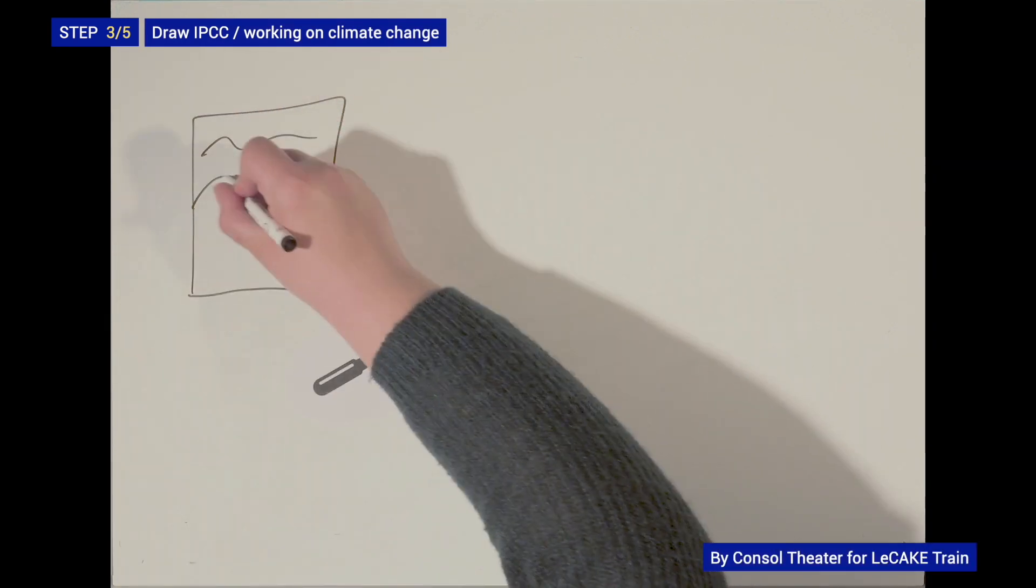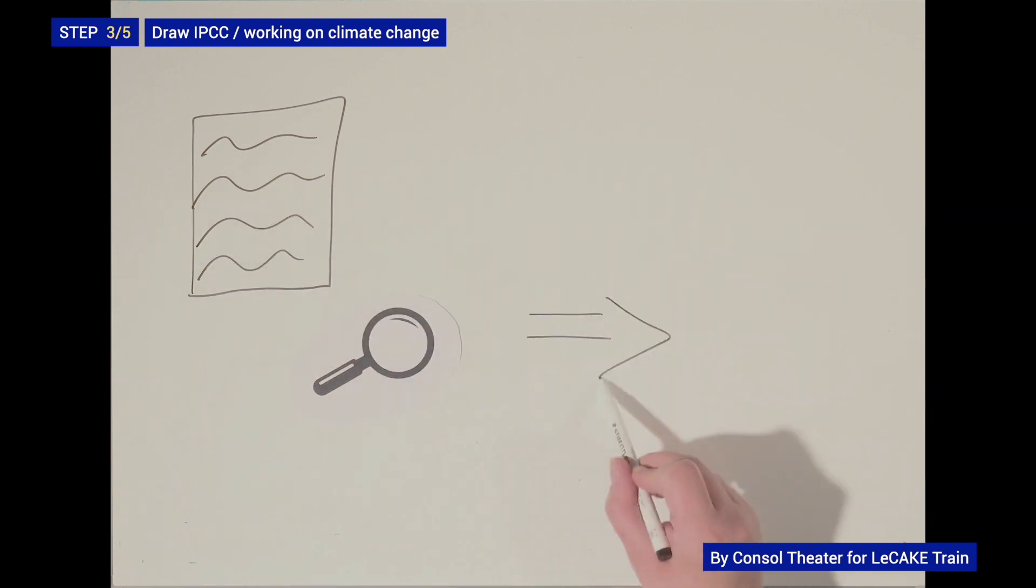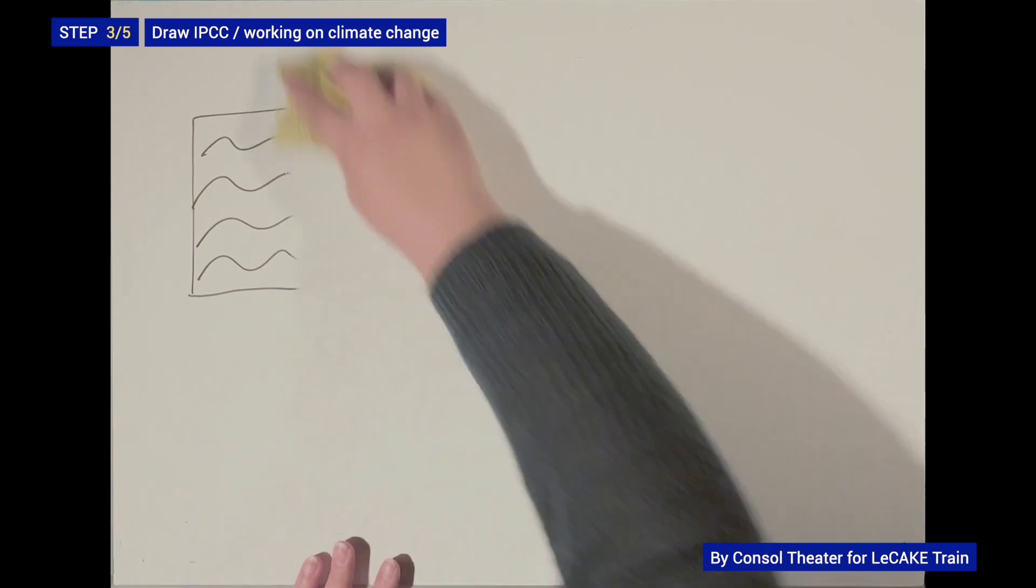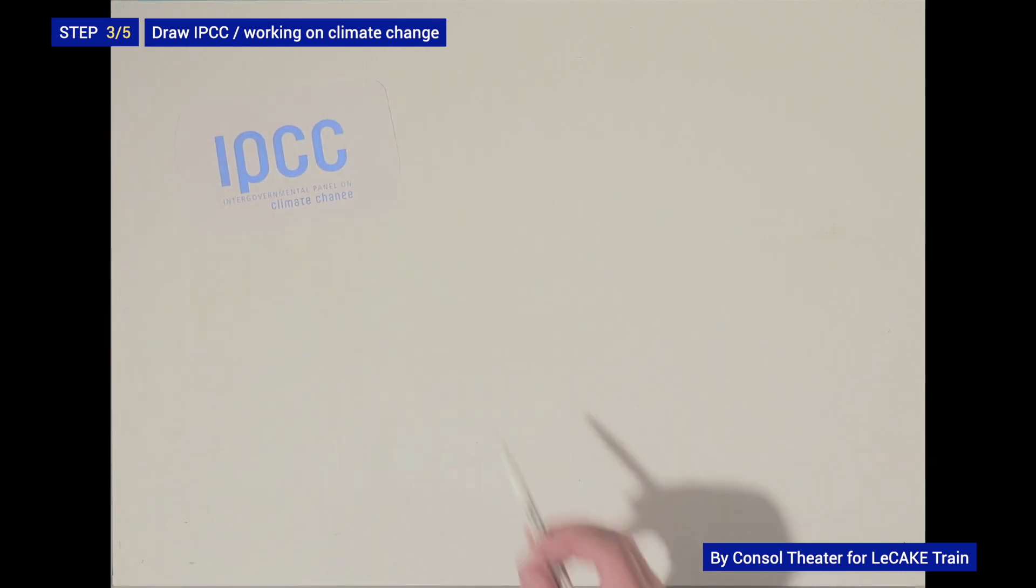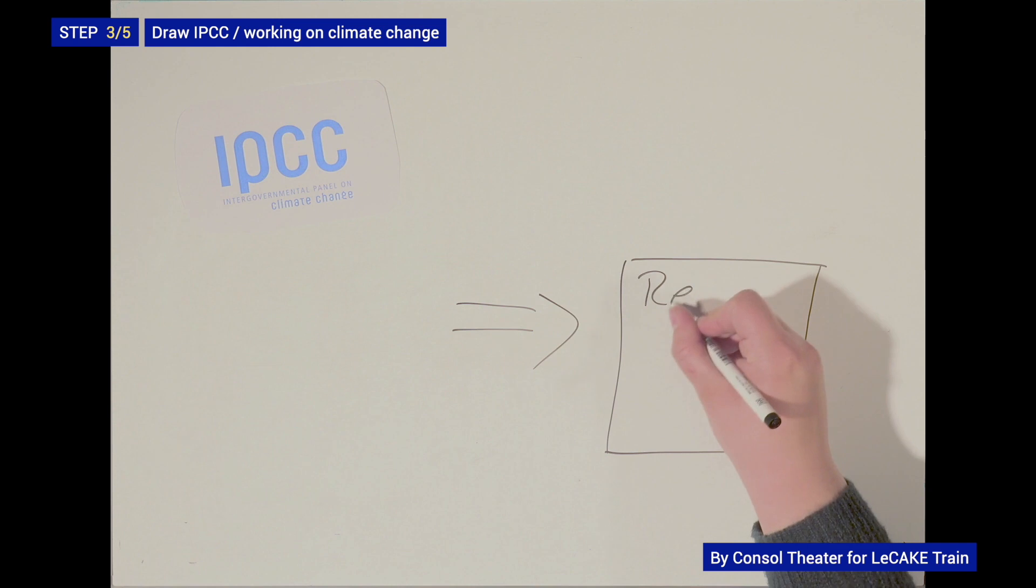Can you explain what working on climate change means for the IPCC? Sure. It means that the IPCC's researchers gather all the information available about climate change from different scientific sources. They read reports and studies from all over the world and summarize them. Having compiled all the information, they write a report consisting of many hundred pages. Since this is such a time-consuming task, a new report is published only every six years.